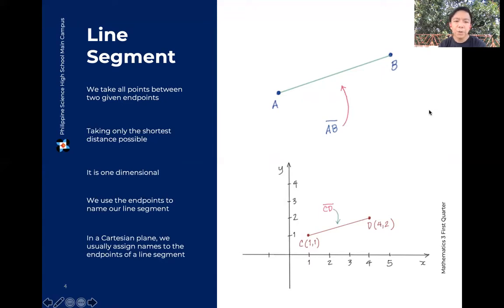Sa Cartesian plane, we usually assign names to the endpoints of a line segment. Meaning, sabi natin kanina, pwede yung point walang pangalan, nalagyan lang natin yung coordinate. Pero kung nasa Cartesian plane yung line segment, it makes sense na bigyan natin ang pangalan yung points dun sa magkabilang dulo. Para magbigyan natin ang pangalan si line segment. So may point tayo sa 1-1, may point tayo sa 4-2. Bigyan natin ang pangalan C yung nasa 1-1, D yung nasa 4-2. Para pwede natin identify ito as line segment CD.